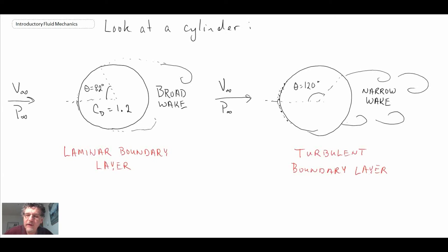If we look at the drag coefficient of a cylinder with a turbulent boundary layer, the drag coefficient is much lower at 0.3. The reason is because the boundary layer is energized.